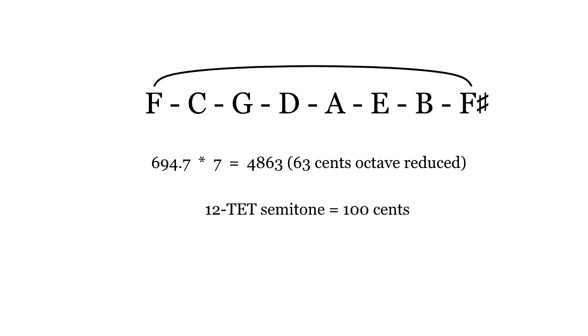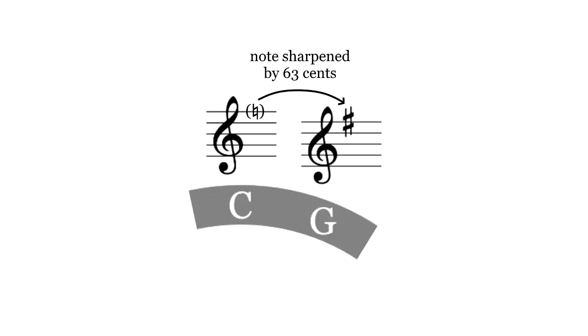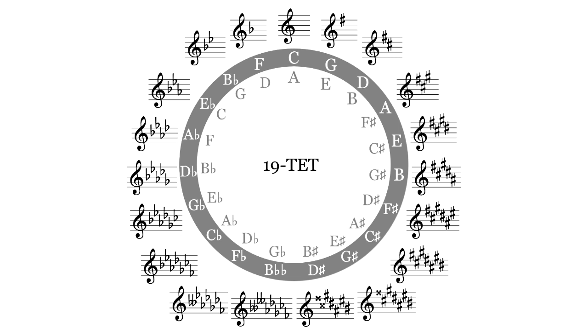This slight change in the fifth matters more the further you go along the chain. The difference between F and F sharp, an augmented unison, is quite a bit smaller than it is in twelve tet. In a sense, this means the change in brightness from moving a step along the circle of fifths is directly reduced. I like to think of this as the circle of fifths having finer gradations of brightness.